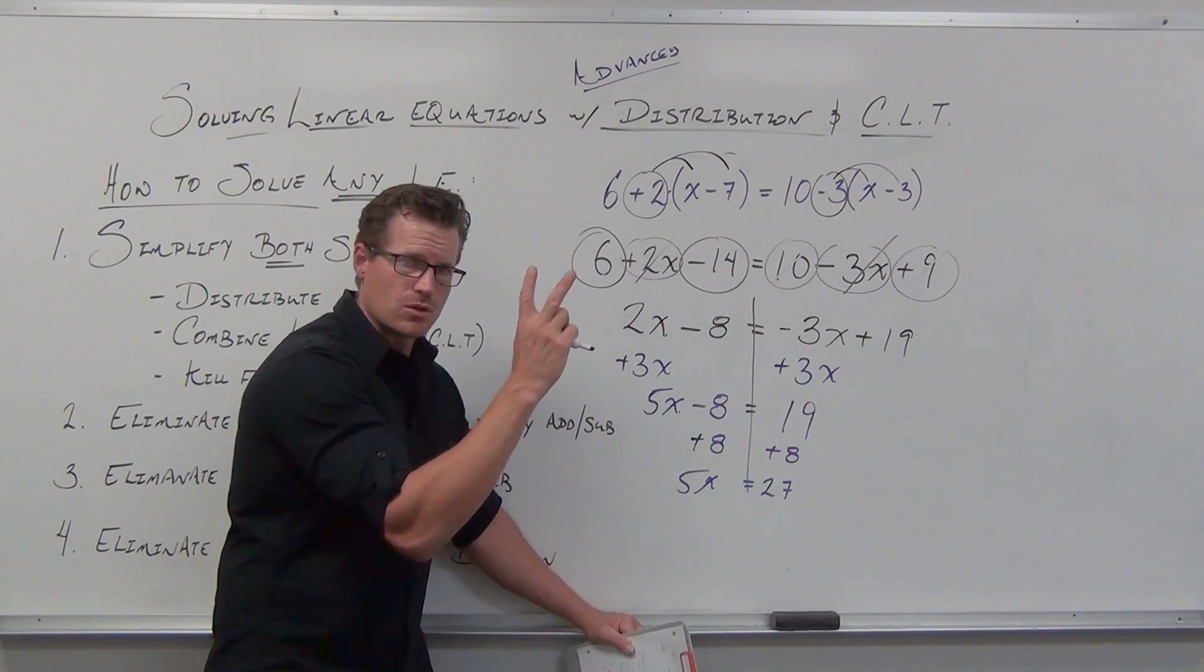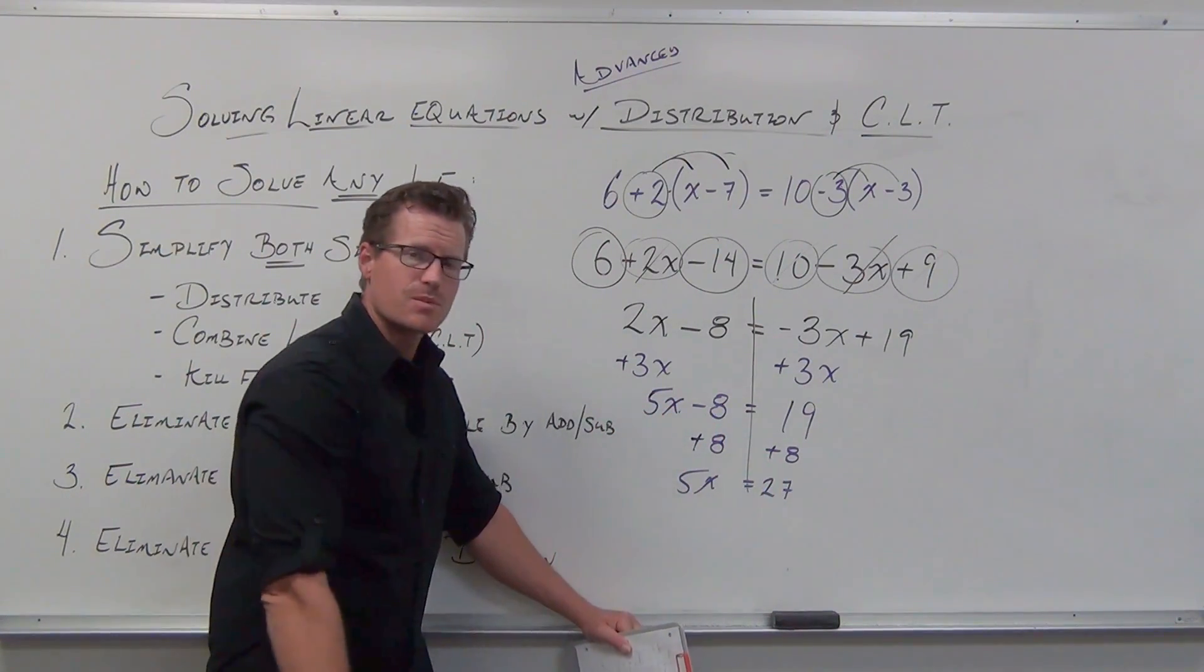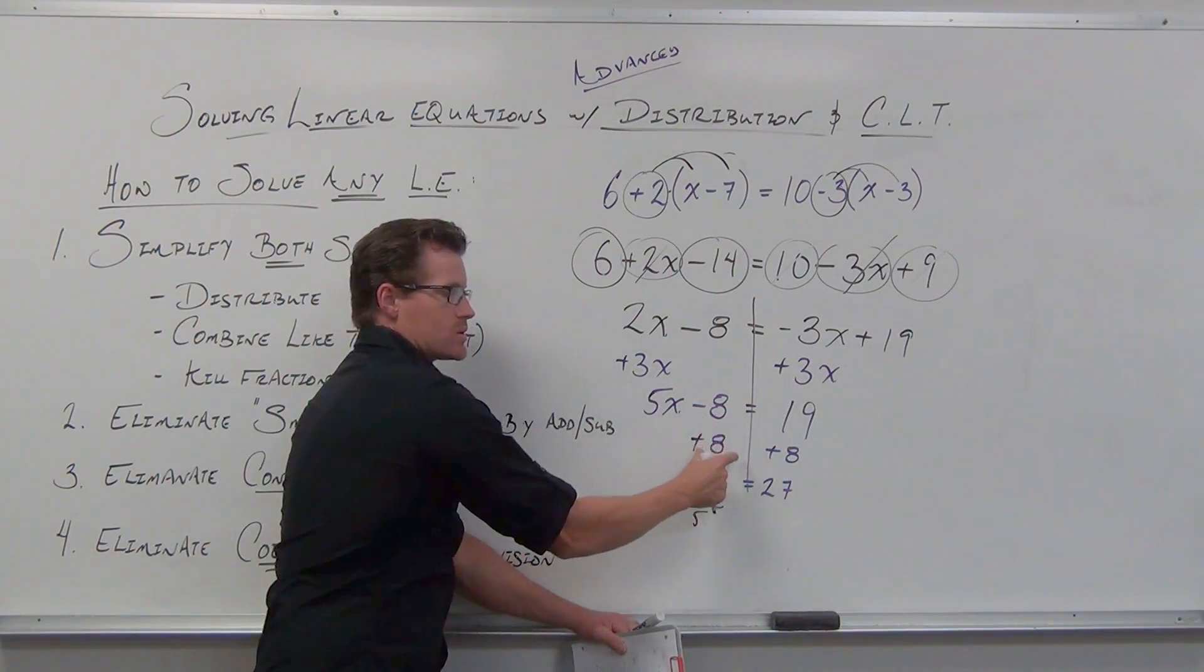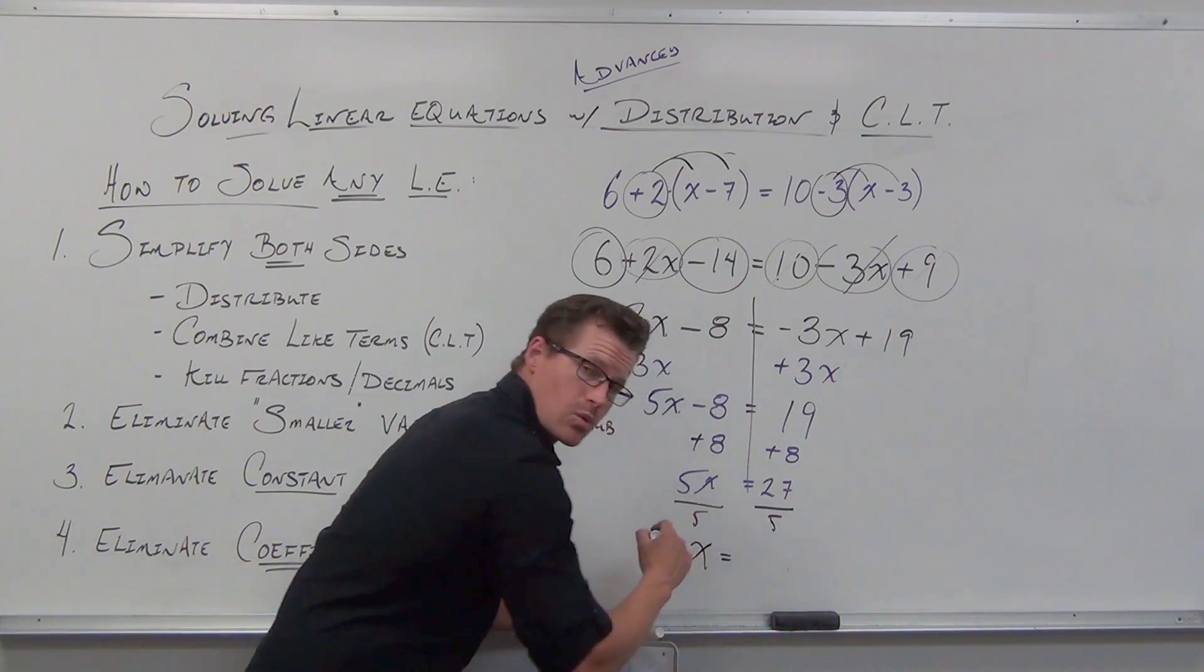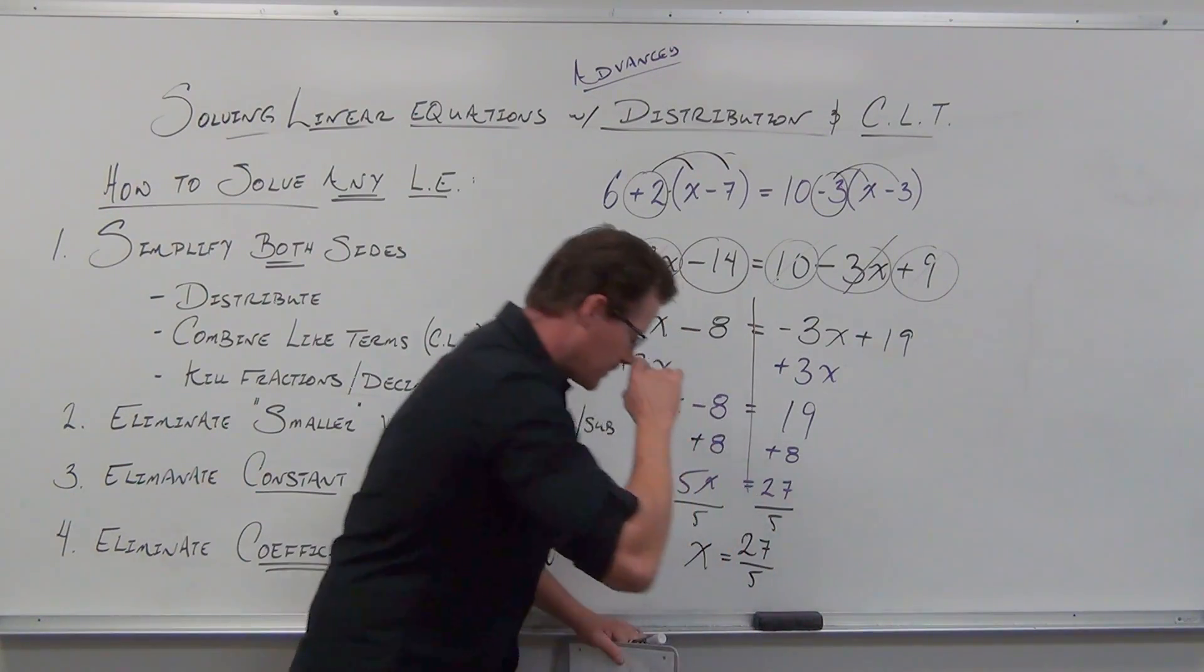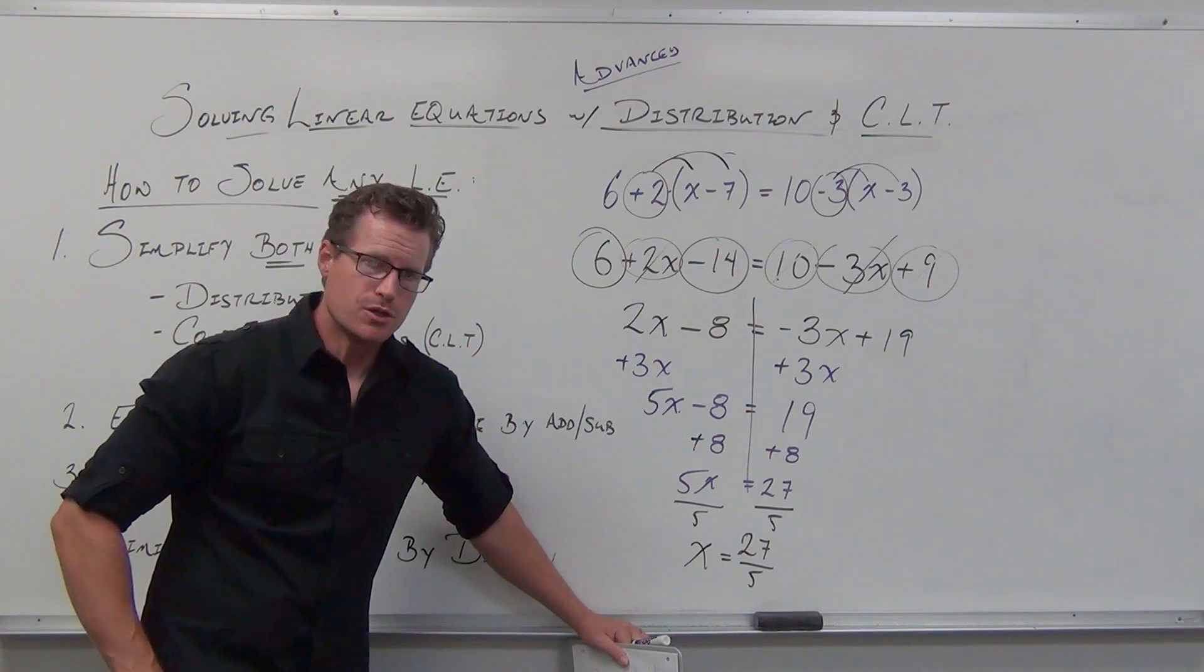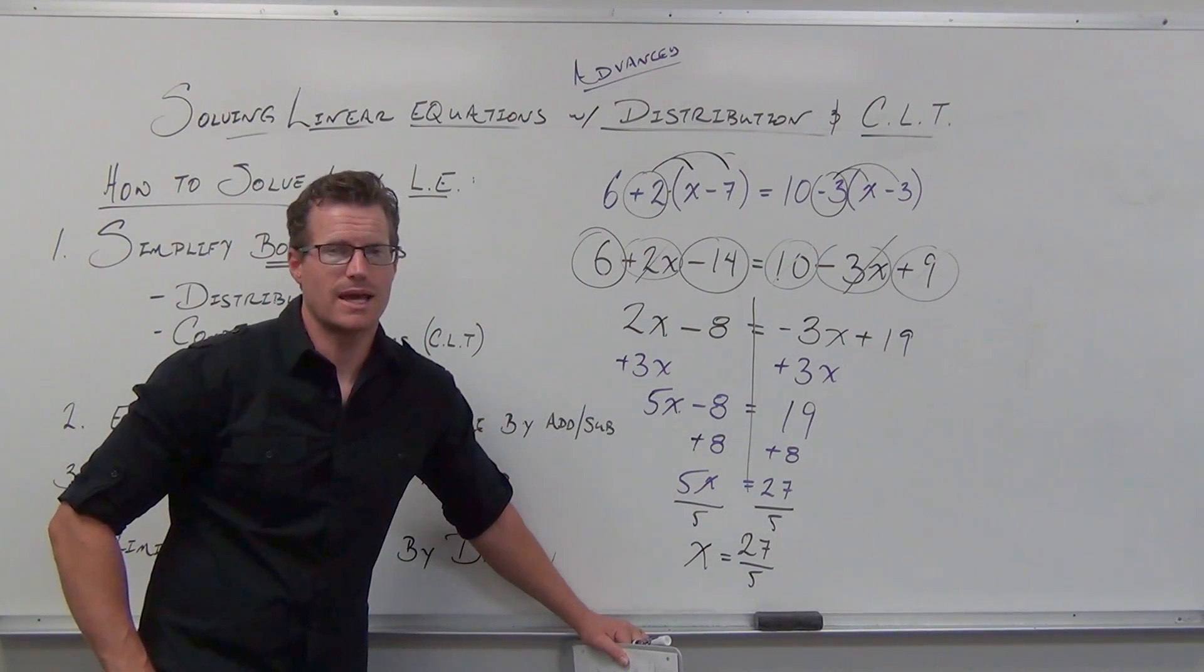After you get rid of your constant term, you should have exactly two terms. You should have a variable term on one side with just a coefficient, and then you should have a constant on the other side. The last step is always divide. So the only way to get rid of a coefficient is to divide both sides by exactly the same number. You're trying to get ones at the very last step, because one times your x is going to give you back your x. We get 27 over 5. Is it simplified? Is it improper? That's fine. As long as it's simplified.